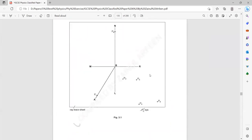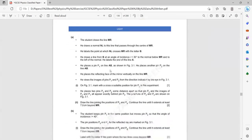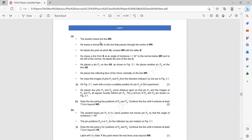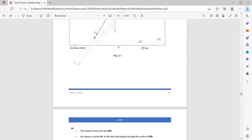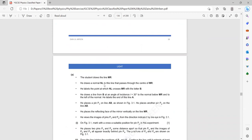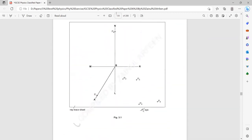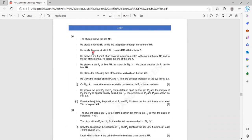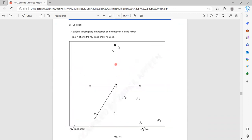You just have to follow the instructions for these questions. The first instruction, student draws a line MR. As you can see here, it's drawn already. He draws the normal. Normal is always perpendicular NL. So you can see he drew the normal NL. He labels the point at which the normal NL crosses MR as B. So you can see where NL crosses MR, he labeled that as B.